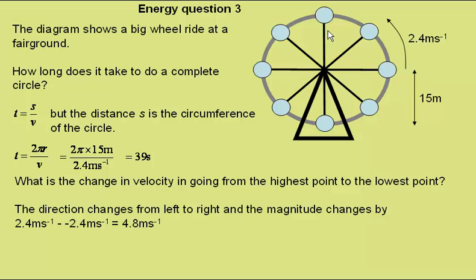So the change in velocity is the final velocity, 2.4 metres per second minus the initial velocity of minus 2.4 metres per second giving a magnitude of velocity change of 4.8 metres per second.